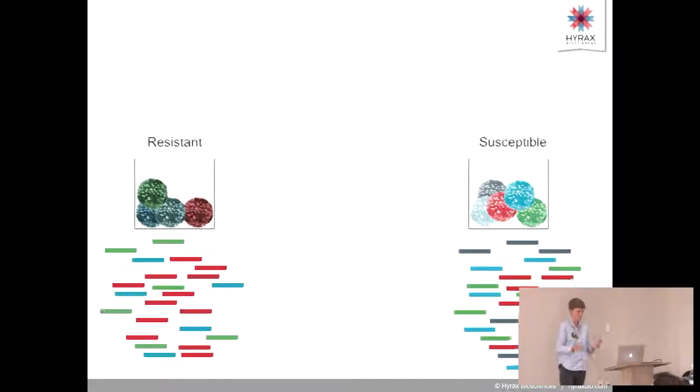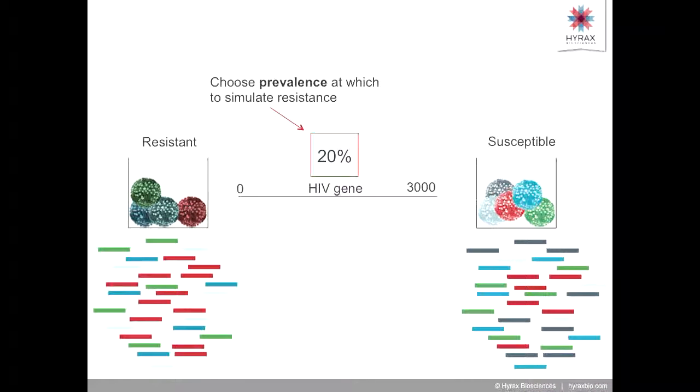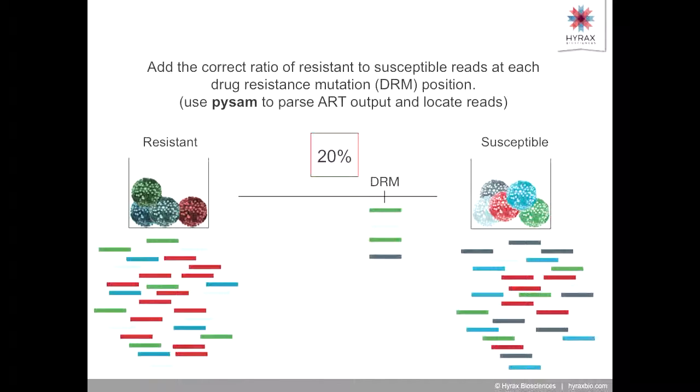In order to do that, you take your resistance and susceptible sequences and say, just for an example, we want to simulate resistance at 20% prevalence. So 20% of the HIV sequences in this patient's body are resistant. Say that in our 3,000-base HIV gene, there's a drug-resistance mutation over here. That very simply means for this drug-resistance mutation, we need to select four susceptible reads that cover for every one resistant read. It's not brain surgery, that gives you 20%. We use a really cool tool called PySAM, which you can plug straight into ART and parses the key that ART gives you about where the errors were in the simulated reads, so you can figure out exactly where they were located.